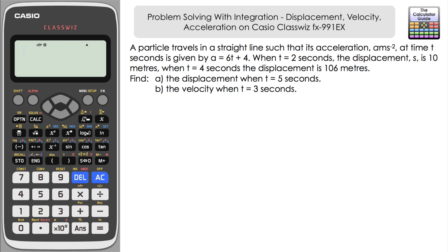If we have an equation for the acceleration, then if we integrate this equation we can find an equation for the velocity of the particle. So v is going to be the integral of a with respect to t. Integrating 6t + 4 gives us 3t² + 4t plus a constant of integration. At present we have no information about the velocity at a particular time, so we can't find the value of this constant c — we'll leave it as c for now.